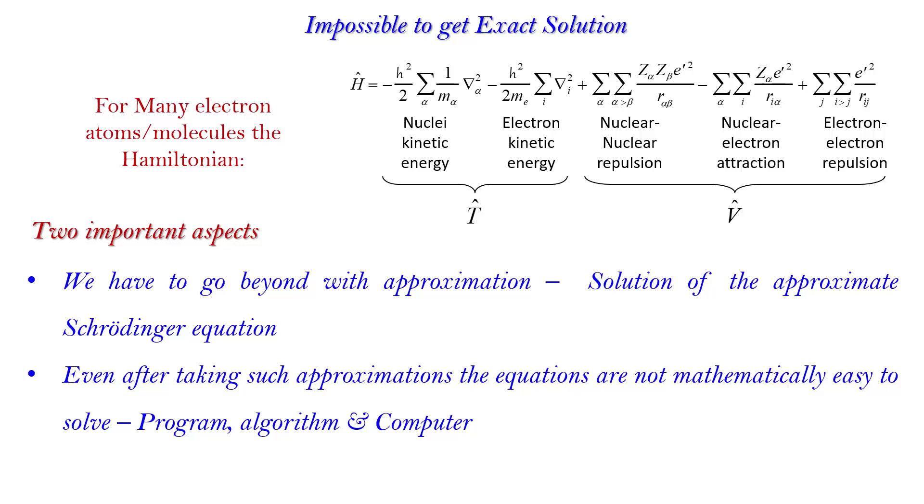In basic computational chemistry, what we can say is that it is nothing but the solutions of the approximate Schrödinger equation with the help of computer. What we will do is we will see that computational chemistry, what is explained in the next lecture. So, thank you.